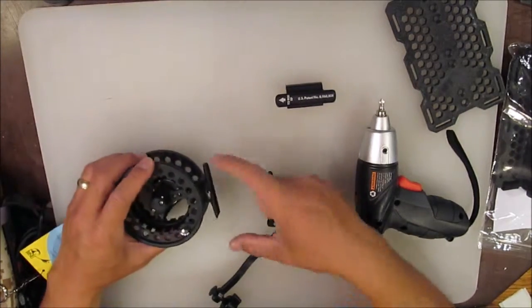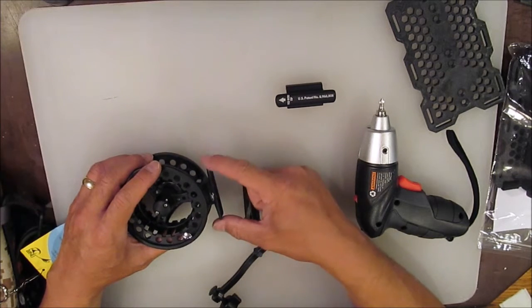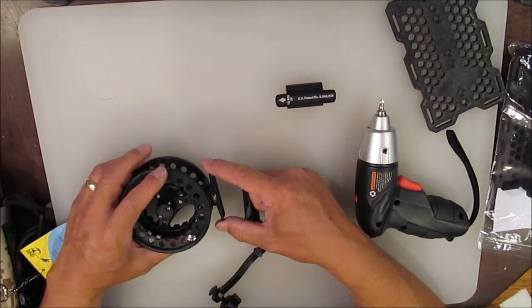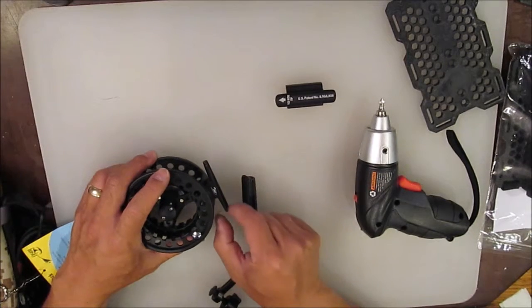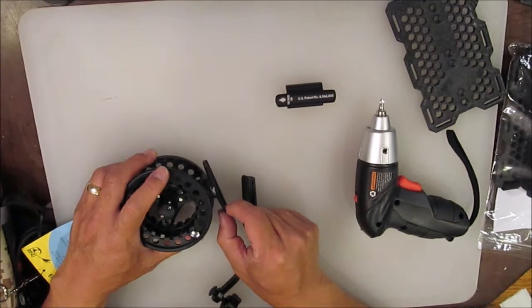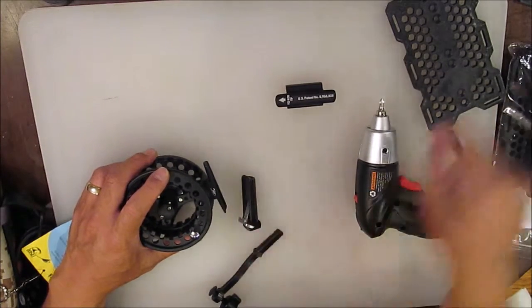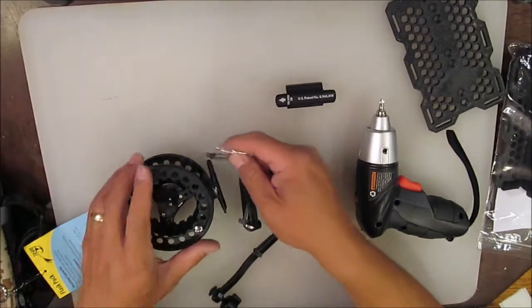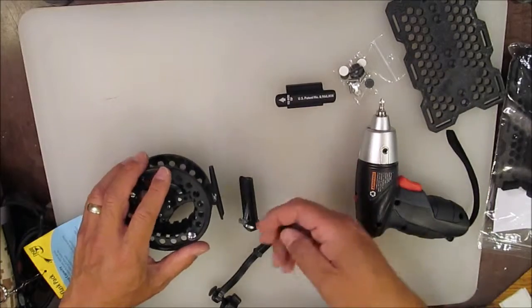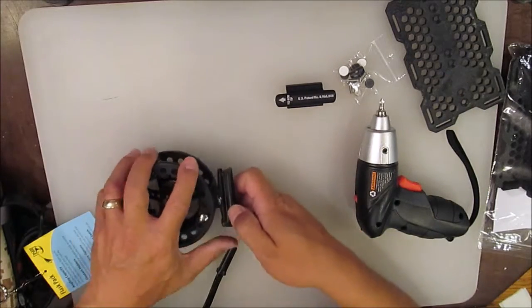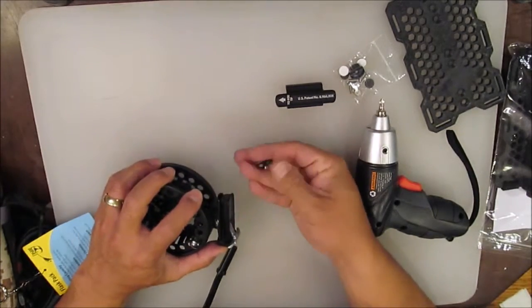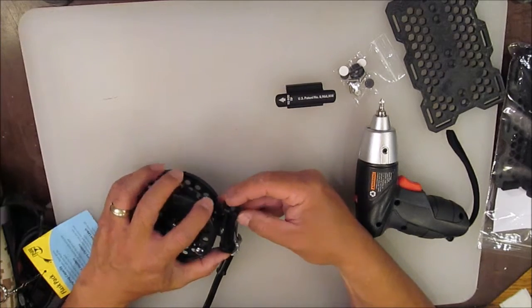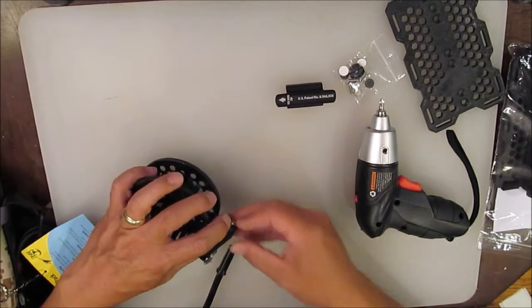All reels are supposed to have an industry standard size for a reel foot. There are some that are thicker, Hatch and some Akuma reels are a little thicker, and that's where you have this bigger cap here you can use with those reels. Most other reels, you're going to use the cap that came on your Rexfly. You just put that on there and then just tighten it down.